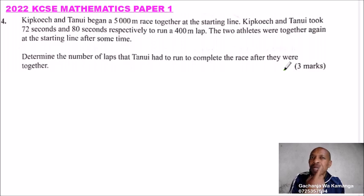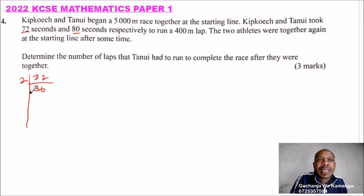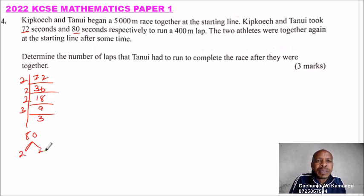For us to be able to do this, we need to find out how many seconds had elapsed when they were together again. And we get that by getting the LCM of 72 and 80. So we can get the factors of 72 and 80. So we get 2, you get 36, you get 2, you get 18, you get 2, you get 9, you get 3, you get 3. So you can use this method. Or you can use the other one, 80 divided by 2 is 40, divided by 2 is 20, divided by 2 is 10, divided by 2 is 5. That is how you get the factors.